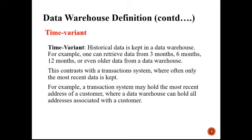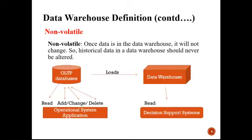In contrast with transaction systems where often only the most recent data is kept, in a data warehouse we keep adding recent data over time. For example, a transaction system may hold only the most recent address of a customer, whereas a data warehouse can hold all addresses ever associated with that customer. Now, another term defining data warehouse is non-volatile. Non-volatile means something that cannot be changed — just like ROM is non-volatile memory as compared to RAM which is volatile. Once data is in the data warehouse, it is not changed. Historical data in a data warehouse should never be altered.